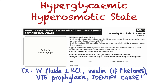Insulin is only given if there is significant ketonemia. Metformin can be stopped for a few days as there is a risk of metabolic acidosis. A diabetic nurse review before discharge can prevent recurrence and improve long-term outcomes. HHS has a higher mortality rate than DKA. Some complications include thrombosis, stroke and MI.